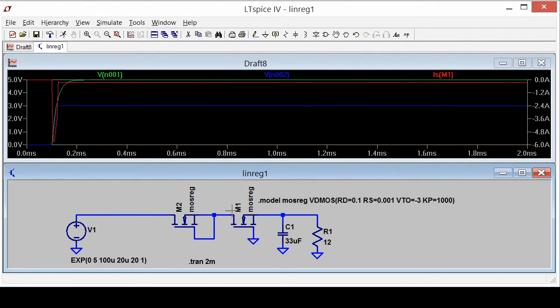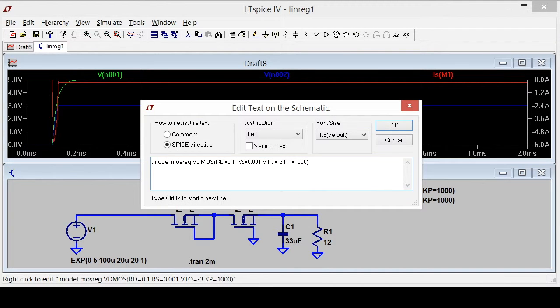Now, I'm ready to add my current limiter. I'm going to copy my model statement, and I'm going to change it so that instead of being MOS reg, I'm going to call it MOS limit. And my parameters are going to be a little different. Instead of the VTO being minus 3, I'm going to change VTO and KP to turn this into a current limiter.